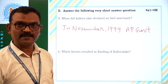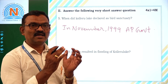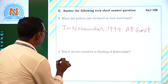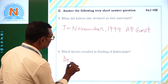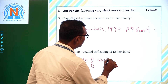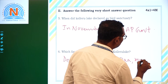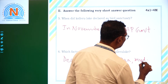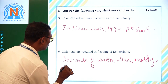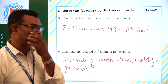Which factors resulted in flooding of Collier Lake? The two factors are: decrease in water area, and decrease of water and muddy ground. These two resulted in the flooding of Collier Lake.